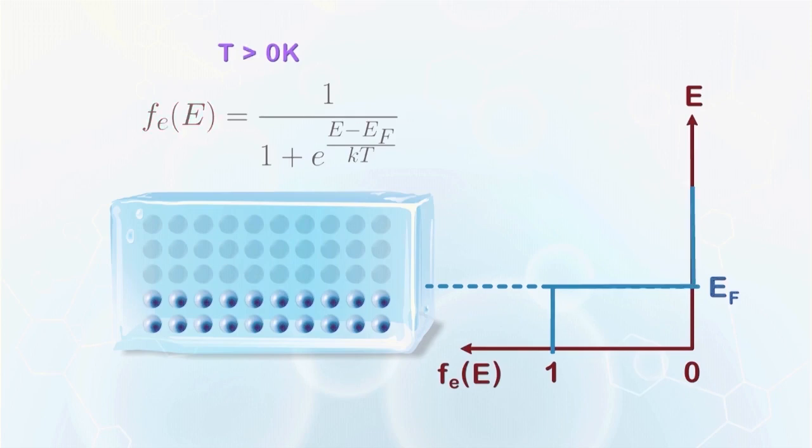At a temperature above 0K, the transition of the Fermi-Dirac function from 1 to 0 is smoothed out, and the probability that carriers occupy states above the Fermi level increases. With this property, the Fermi level can then be defined as the energy where the probability of finding an electron in a state is equal to one half.